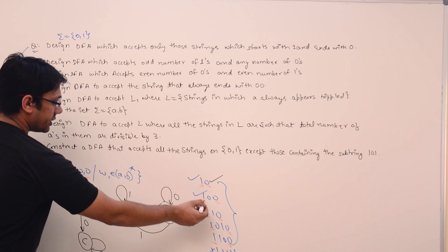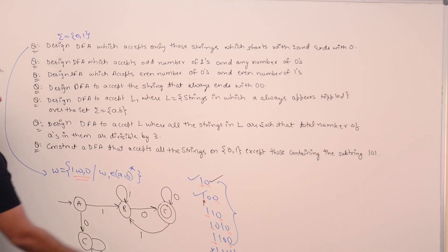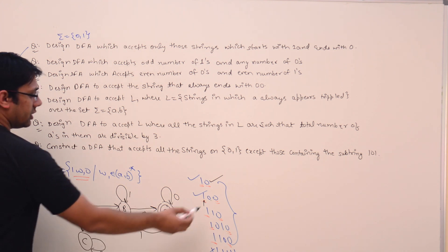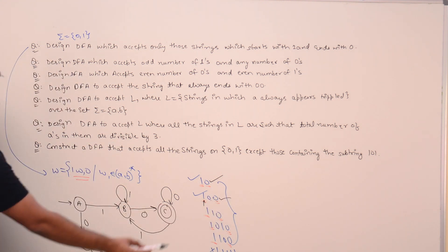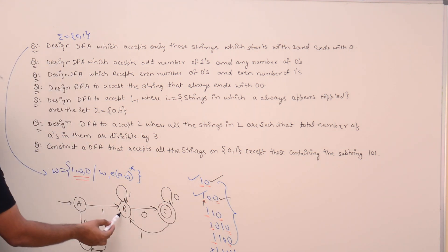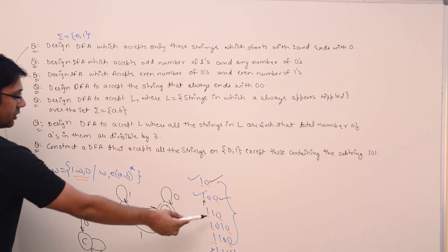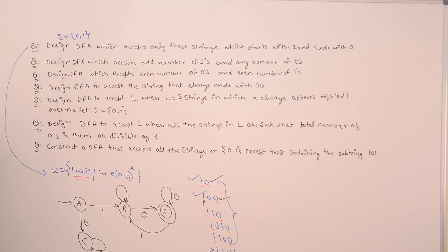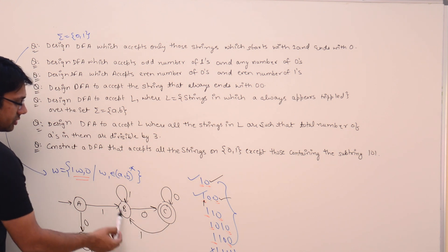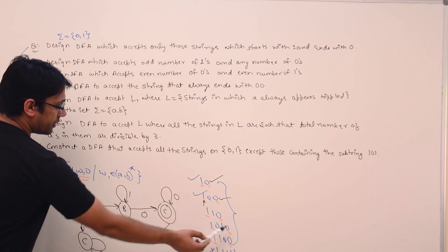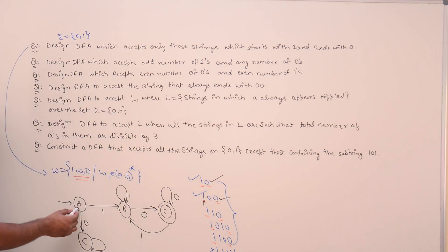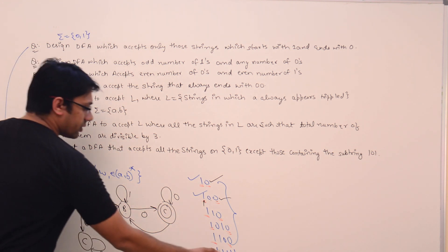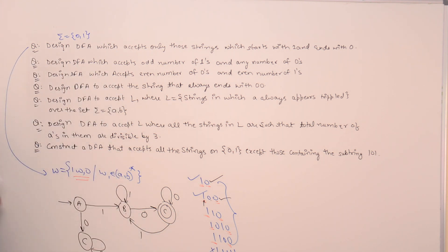For the string 1 0 0: reading 1, we go from state A to state B; reading the first 0, from state B to state C; reading the second 0, we remain at state C. So this string is also accepted. For 1 1 0: from state A to state B on 1, then state B to state B on the second 1, then state B to state C on 0. For 1 0 1 0, after reading the complete string we end at state C, a final state, so it is accepted. For 1 1 1 1, we always remain at state B and it is not a final state, so that string is rejected.